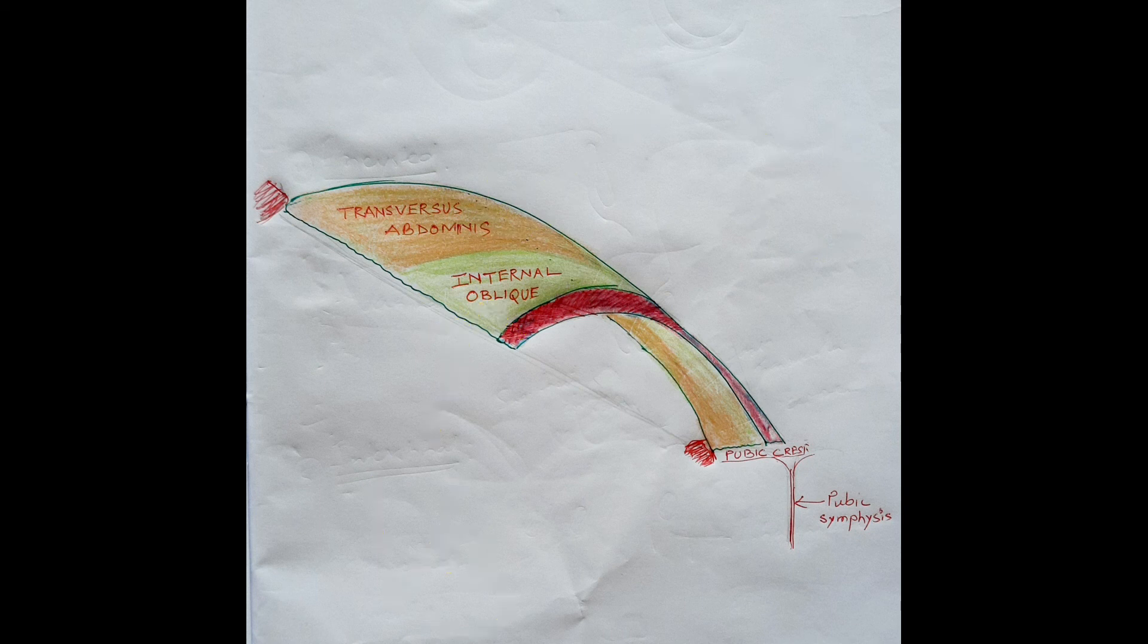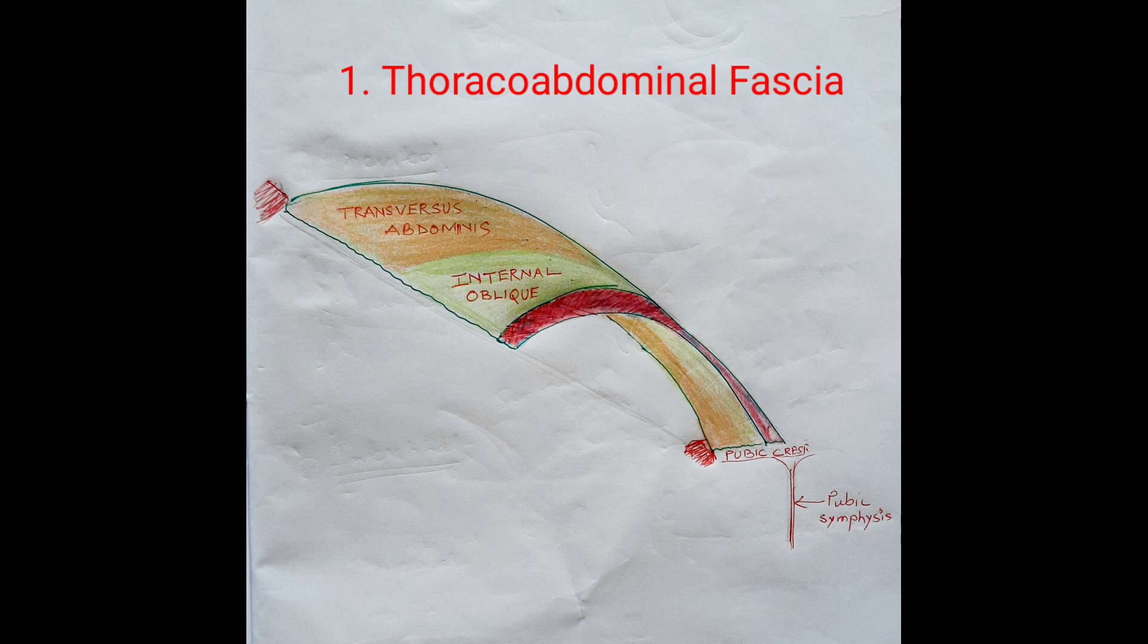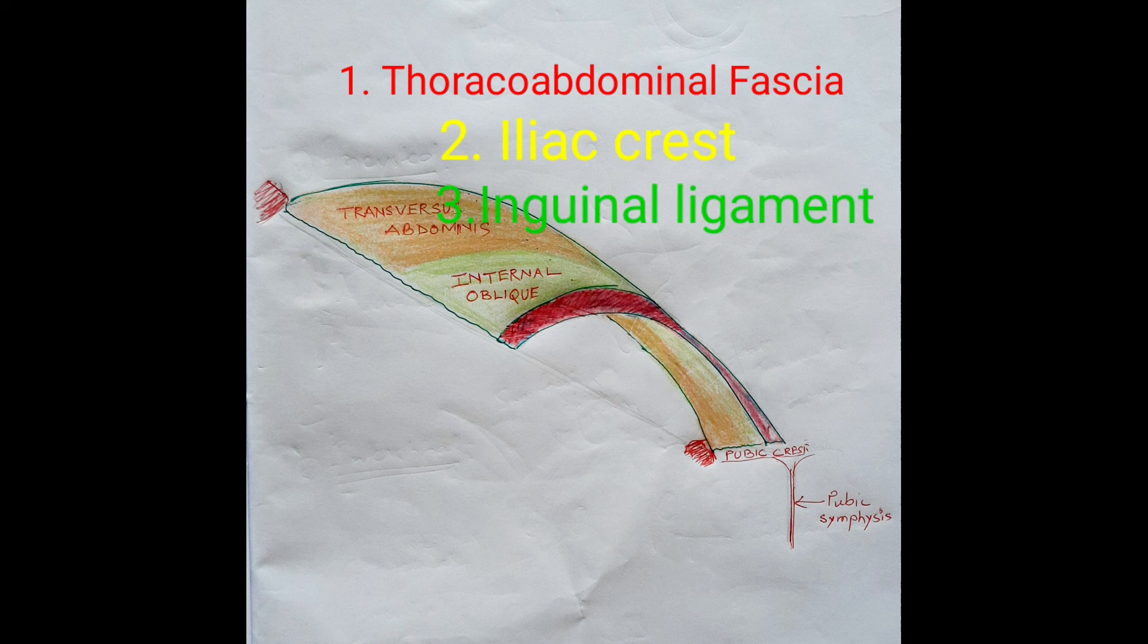We know that transversus abdominis and internal oblique muscle arise from the thoracolumbar fascia, iliac crest, and also from the inguinal ligament.